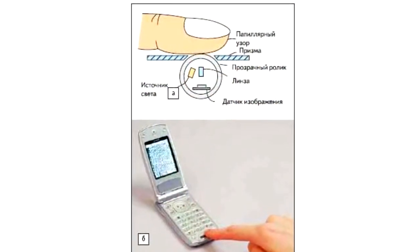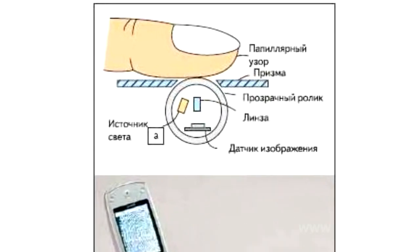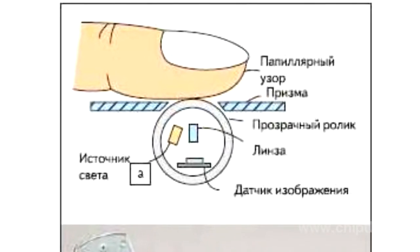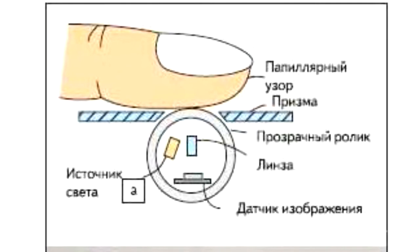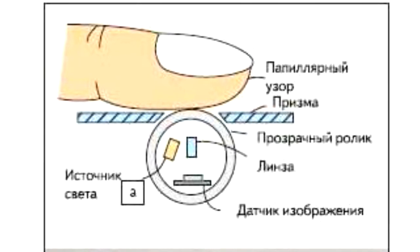Roller scanners are the tiniest ones. The fingerprint is captured as the finger rolls a transparent thin-walled roller. As in the broaching scanner, shots of the papillary pattern are made with some algorithm while the finger is moving.